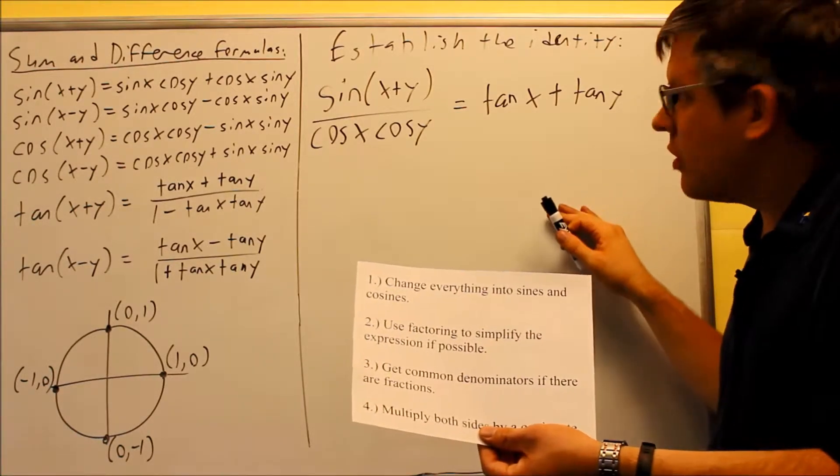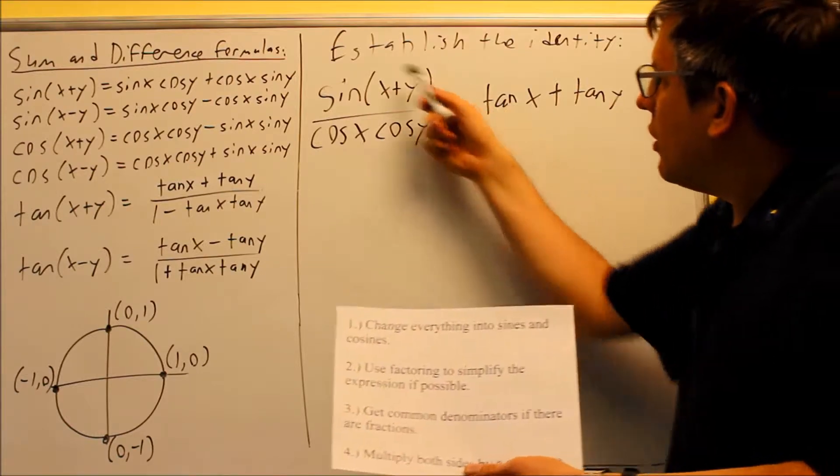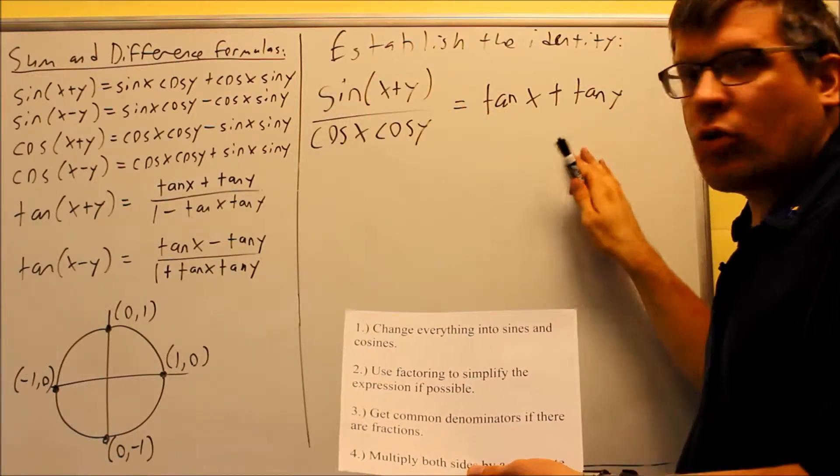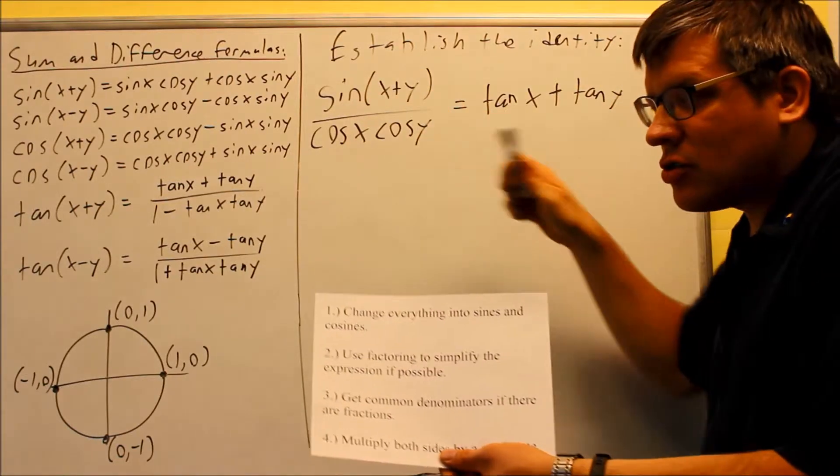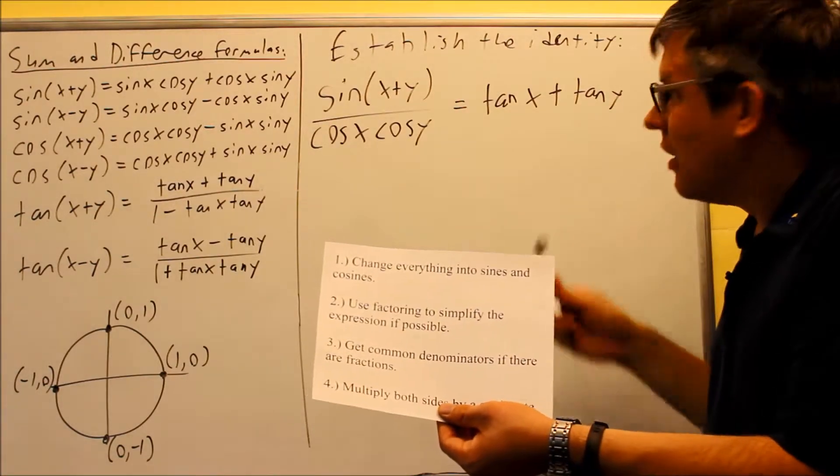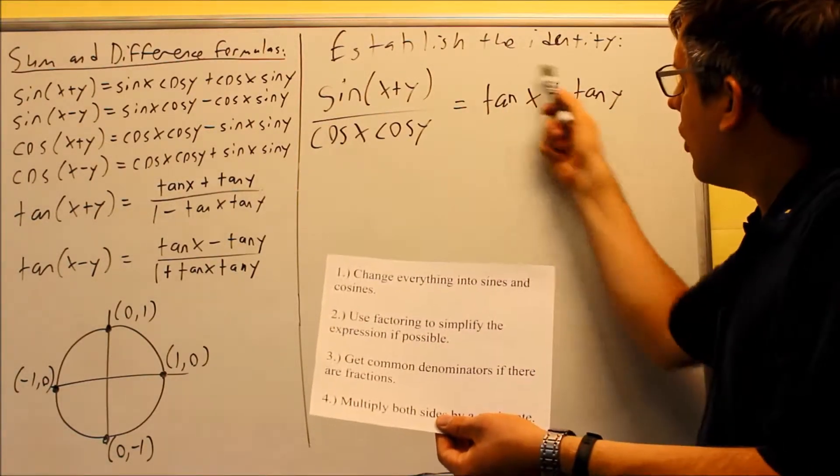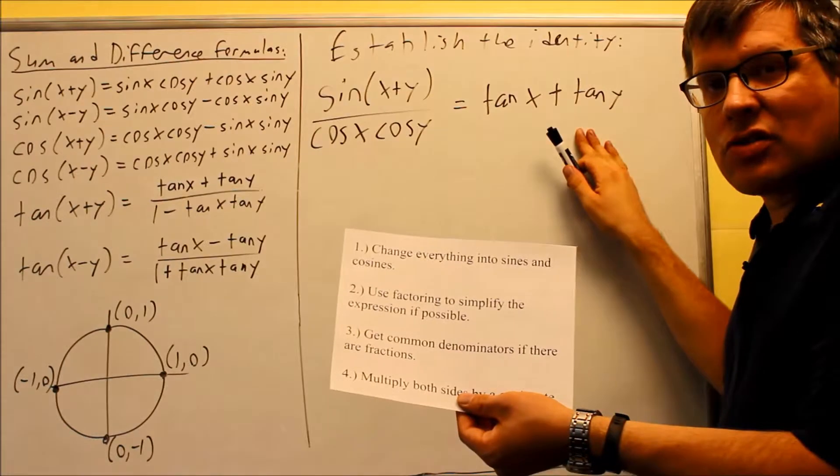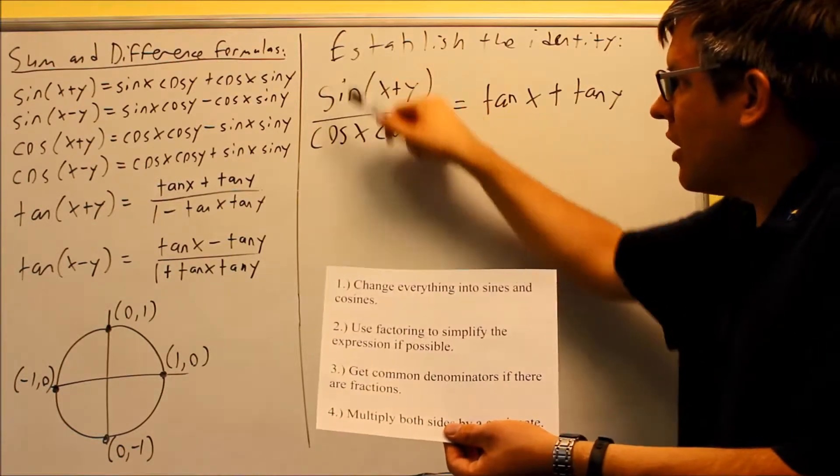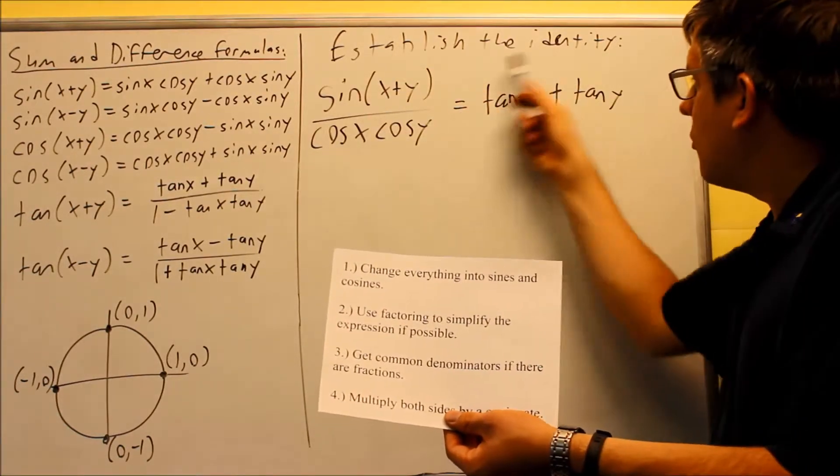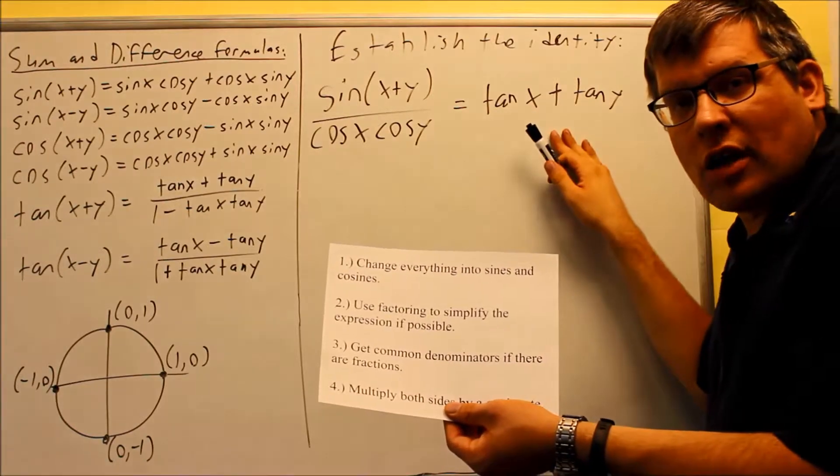So in the notes, what I did was I started with the left-hand side and worked it out to be the right-hand side. Well, instead of doing that, I'm actually going to follow our strategies here. First of all, I want to change things into sines and cosines if possible. The left-hand side already has sines and cosines, so I'm going to change the right-hand side instead.